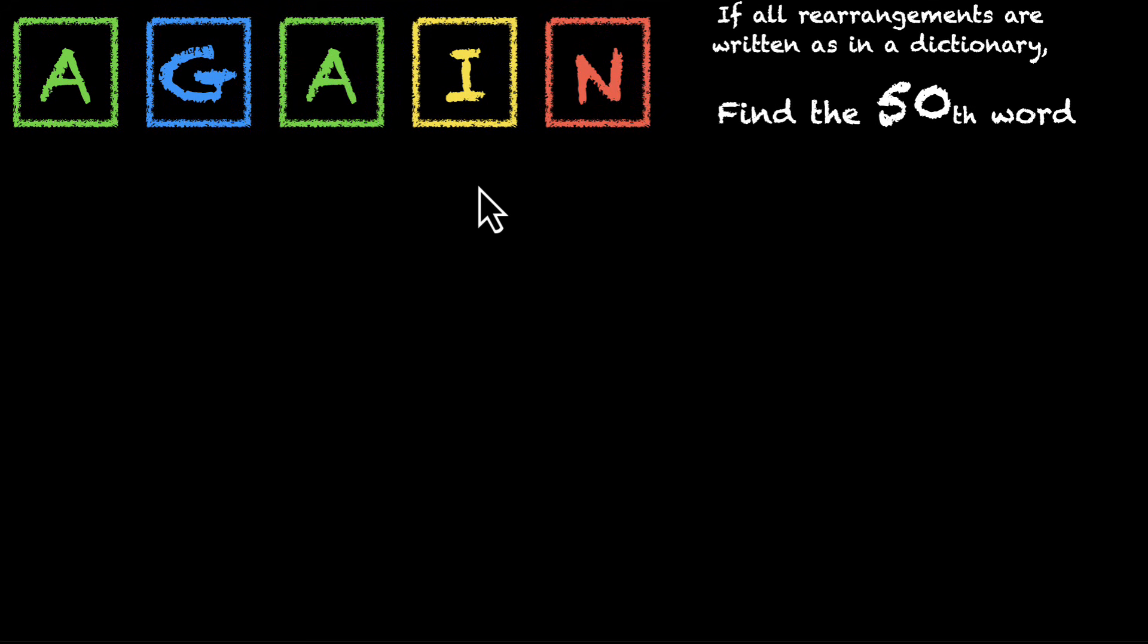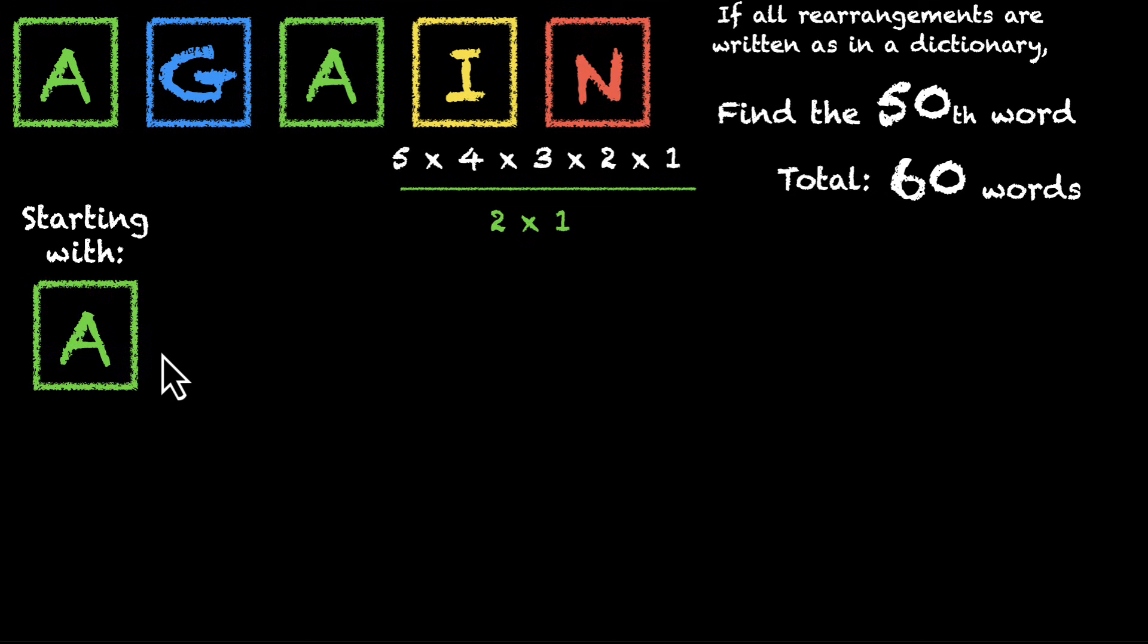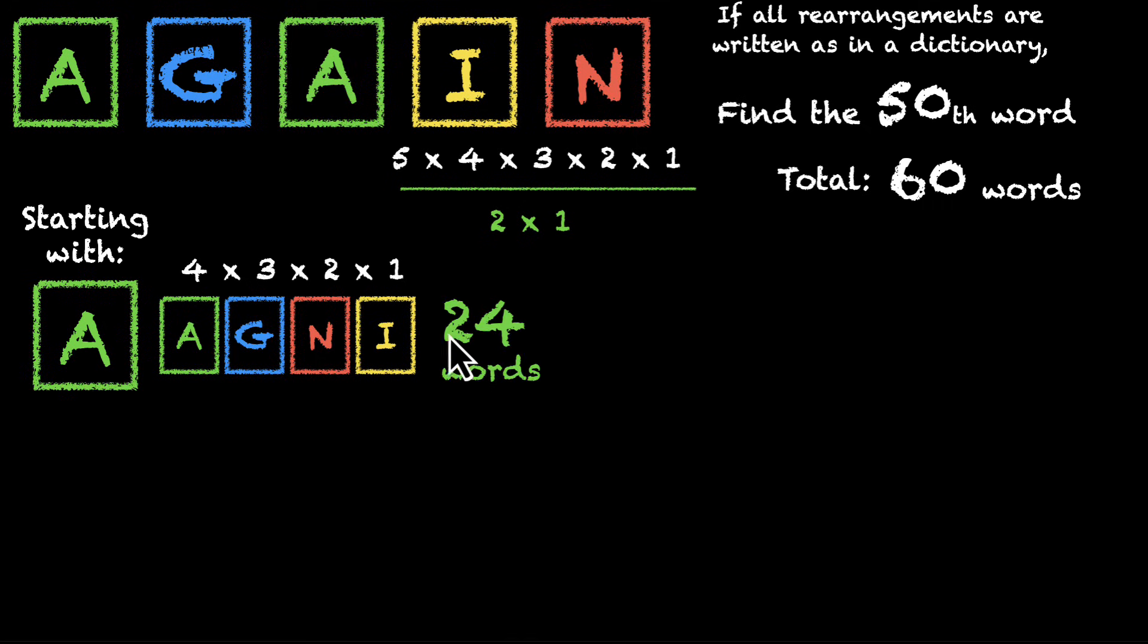Okay, first things first: how many total words do we get? We have five letters, so five times four times three times two times one, but two of them are the same, so we'll divide by two times one. This turns out to be 60. So in total we have 60 words, and we're looking for the 50th word. My guess is that it probably starts with N because N is the biggest letter here, but I can't put my finger on what that actual word is. For that, we need math. So let's start building our dictionary. How many words begin with A? If you fix one of these A's, we're left with A, then I, G, and N—these four letters. How many ways to rearrange these four letters? All of them are different, so four times three times two times one gives us 24. So there are 24 words that start with A.